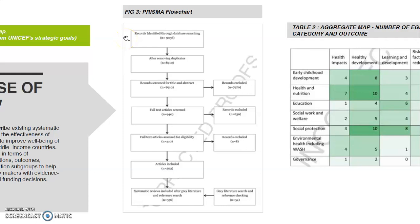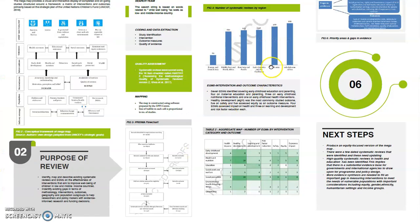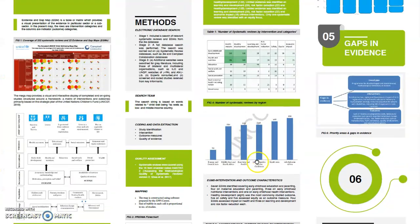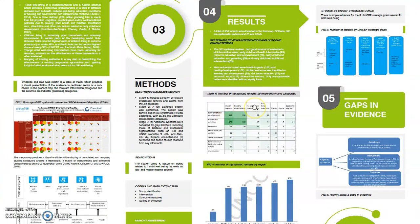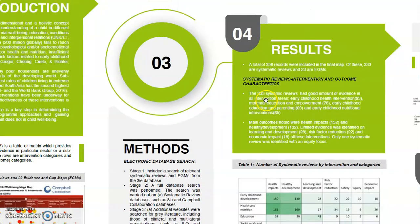My cursor is now pointing towards Figure 3, which depicts the flow of information through different phases of the map. It also shows the number of records identified, included, and excluded at every phase. A total of 356 records were included in the final map. This is presented in Section 4, which is focused on the results.